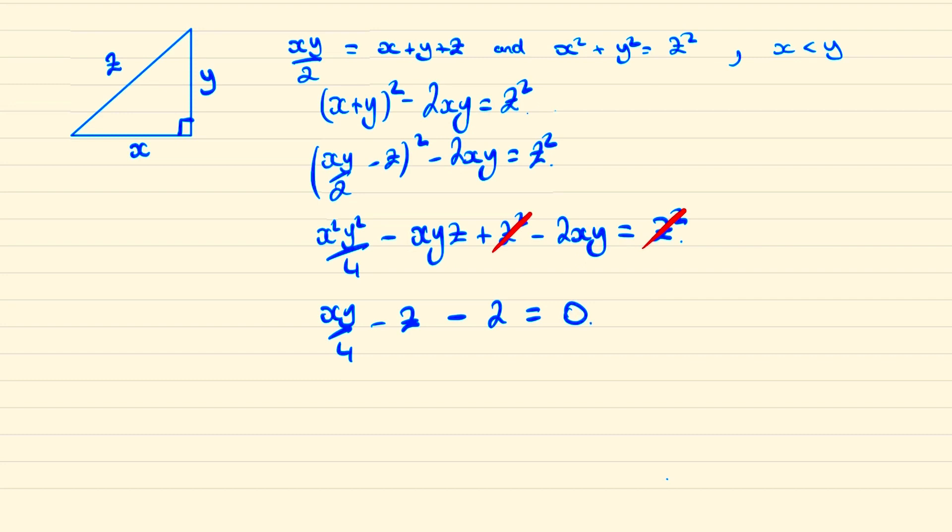From our first equation we can recognize that z will equal xy over 2 minus x minus y, and so making the substitution into our expression xy over 4 minus xy over 2 plus x plus y minus 2 equals 0. Simplifying this expression we find xy minus 4x minus 4y plus 8 equals 0.